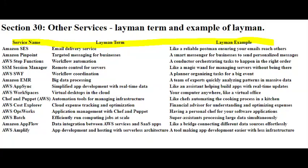AWS AppSync — Simplified App Development with Real-Time Data. It acts as an assistant, making app development easier by handling real-time updates seamlessly.